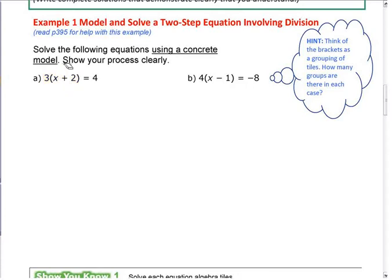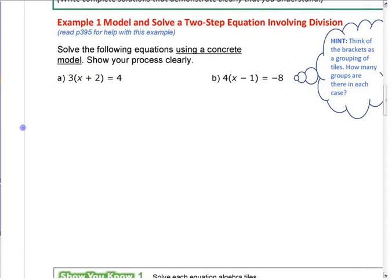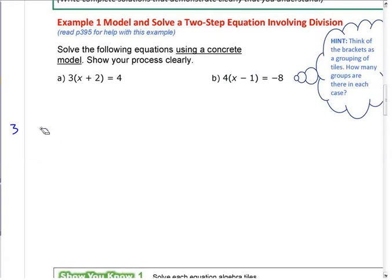We're getting used to writing multiplication differently this year. When you did that integer sheet, it didn't say something like 3 times 4 — it said 3 and a 4 in brackets, or even both of them in brackets. We're not using the times sign; we're just writing something next to each other. So a 3 right next to brackets — what do you think that means? It means there's a multiplication in there.